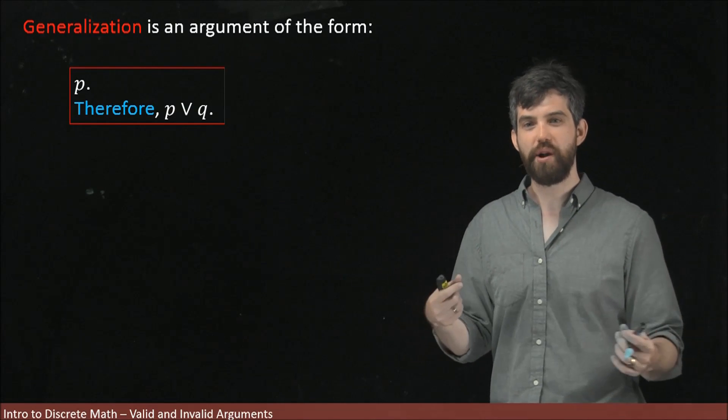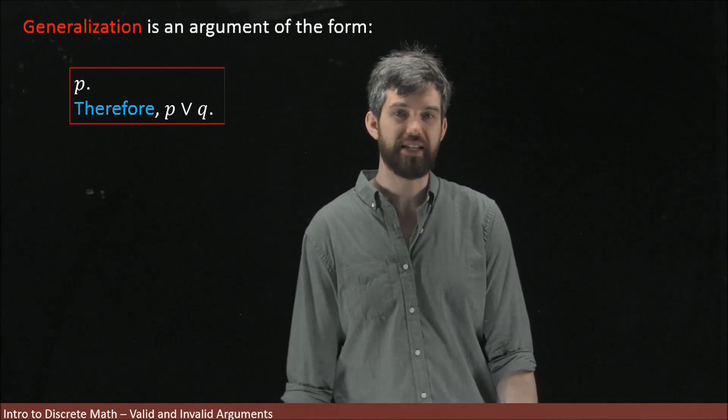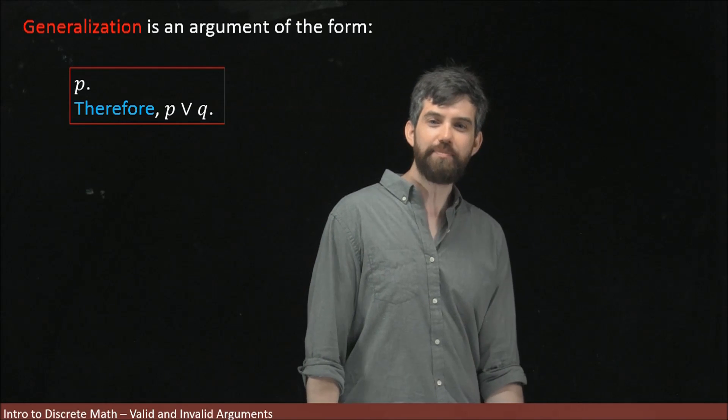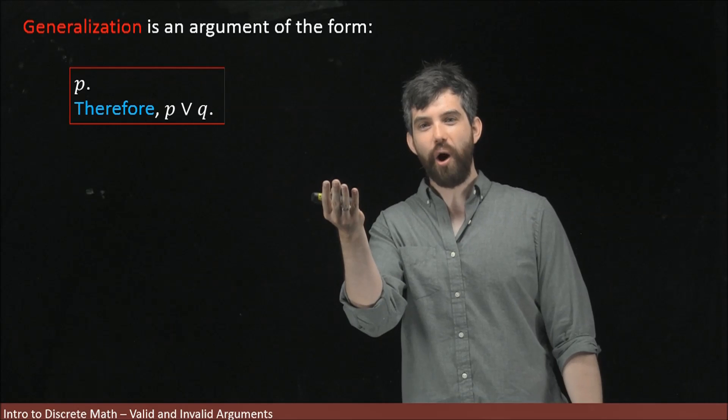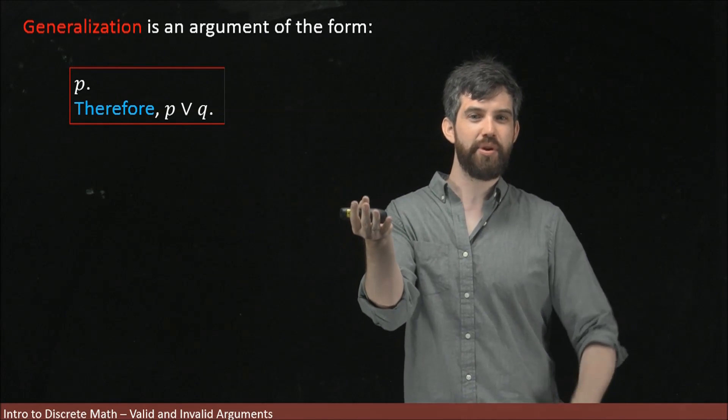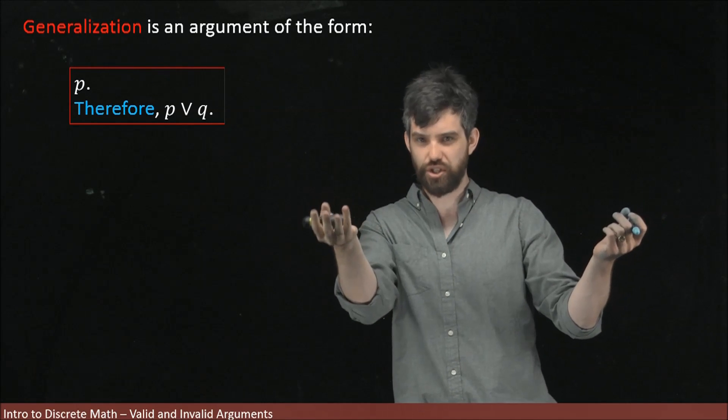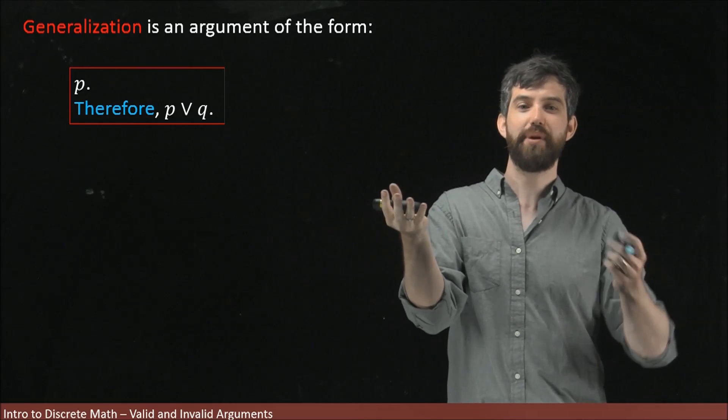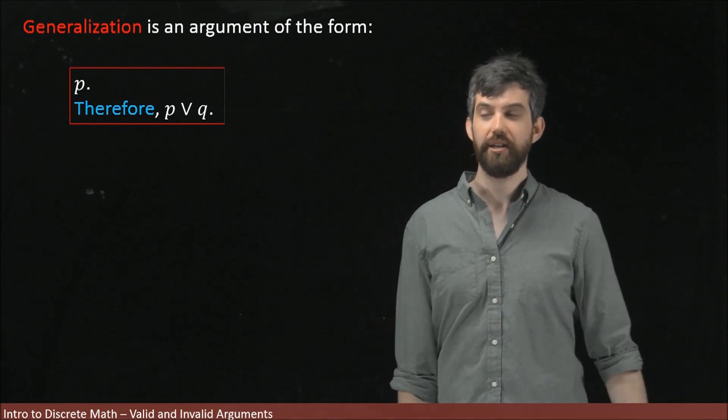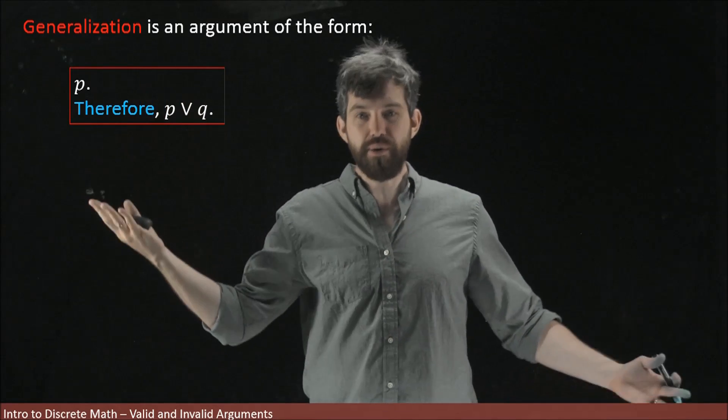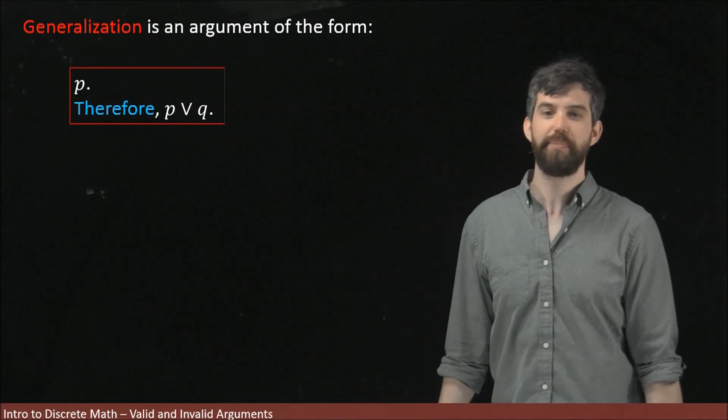The next argument form on our list is generalization. It's basically the idea that if I have some statement, I can always take that statement or another statement. If the original is true, then that statement or something else is also going to be true because an or statement only needs one. So if I have any statement P, I can generalize it to this larger statement P or Q.